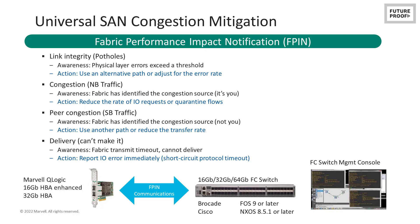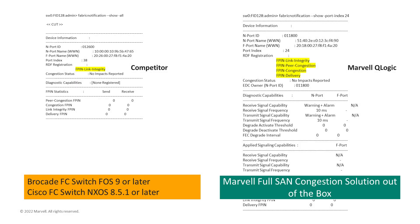Marvell QLogic fiber channel HPAs support all four FPIN notifications in standard firmware and are compatible with both Brocade and Cisco switches. Competitor HPA offerings also support FPIN notifications, but they only provide the link integrity feature as part of their standard offering — for other notifications, customers must purchase additional software and enable licenses. The USCM capability is enabled by default in all current versions of QLogic fiber channel HPA firmware. On the left, only FPIN link integrity is enabled by default on competitor adapters; on the right, all four FPIN functions are enabled by default on QLogic adapters at no additional cost.